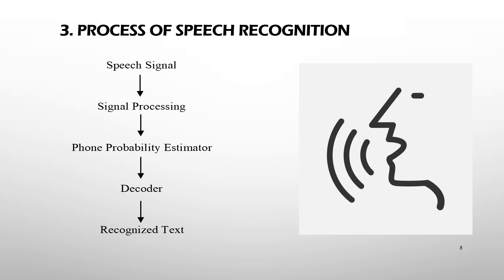Under the speech signal, the spoken words are captured as sounds and converted to digital form using a microphone. Next, signal processing occurs, which involves extracting features and transforming a signal with a linear amplitude into a representation that looks spectral. Next, the phone probability estimator stage estimates the likelihood that a given set of characteristics represents a certain language sound or combination of sounds. The phone probability estimate sequences are then fed into the decoder.